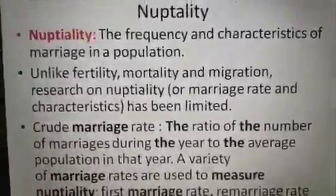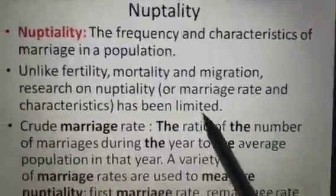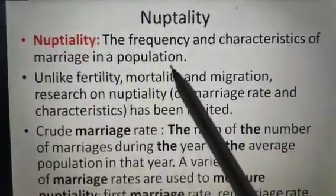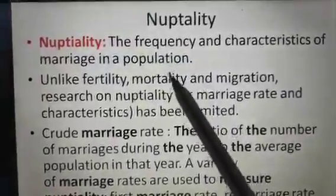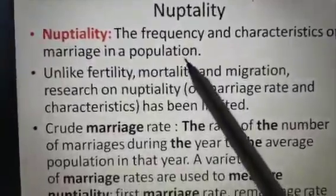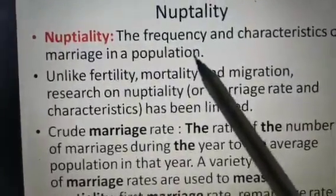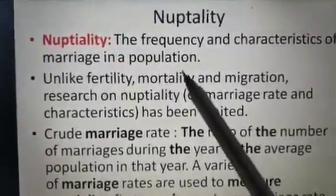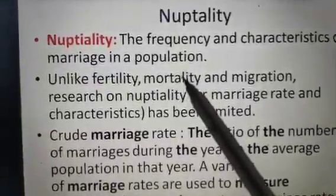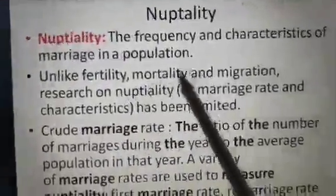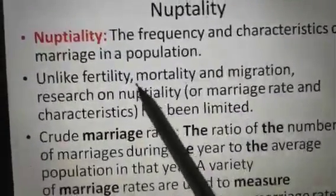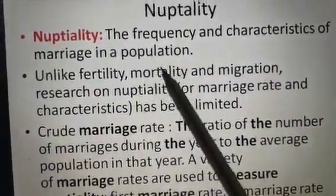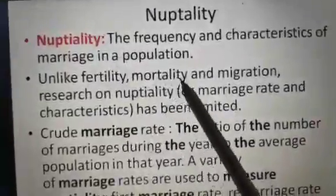Let's start the term Nuptiality. We all know that in demographic events, marriage is an important event. When we measure marriage on an annual term basis, that is called Nuptiality — just like fertility, in which we measure the birth rate of a particular country. So what is Nuptiality? The frequency and characteristics of marriage in a population. Very simply, the frequency and characteristics of marriage in a population is called Nuptiality.